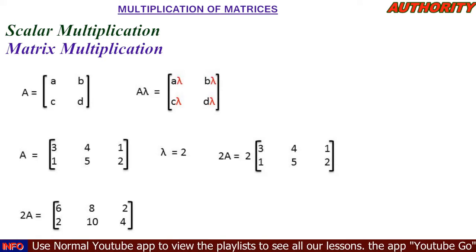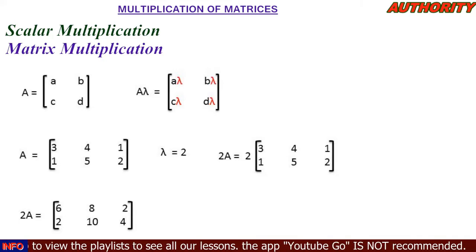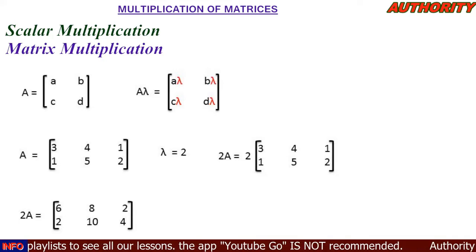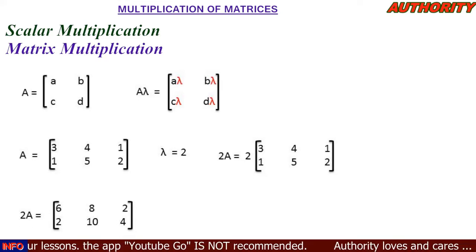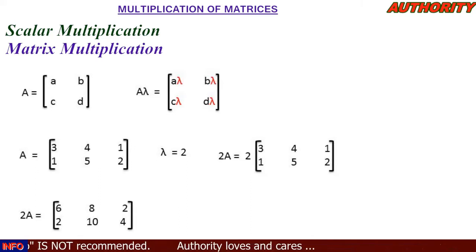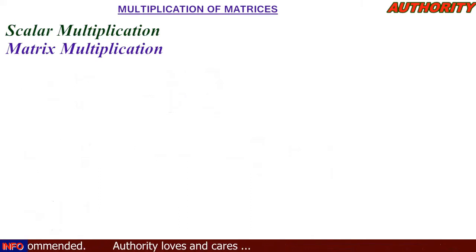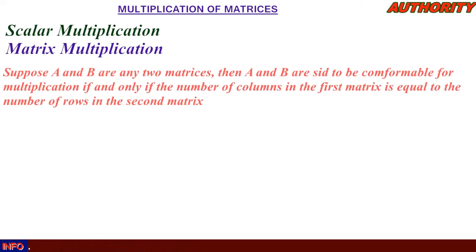This is about scalar multiplication — that is when you have a number multiplied by a matrix. Just use that number to multiply every individual element. Now let's go to the second type: matrix multiplication.